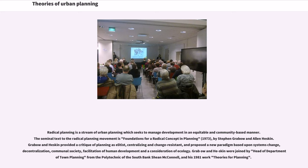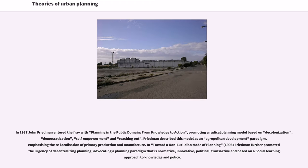Grabo and Heskin were joined by Sheen McConnell, head of the Department of Town Planning from the Polytechnic of the South Bank, and his 1981 work Theories for Planning. In 1987, John Friedman entered the fray with Planning in the Public Domain: From Knowledge to Action, promoting a radical planning model based on decolonization, democratization, self-empowerment, and reaching out. Friedman described this model as an agri-politan development paradigm, emphasizing the re-localization of primary production and manufacture.